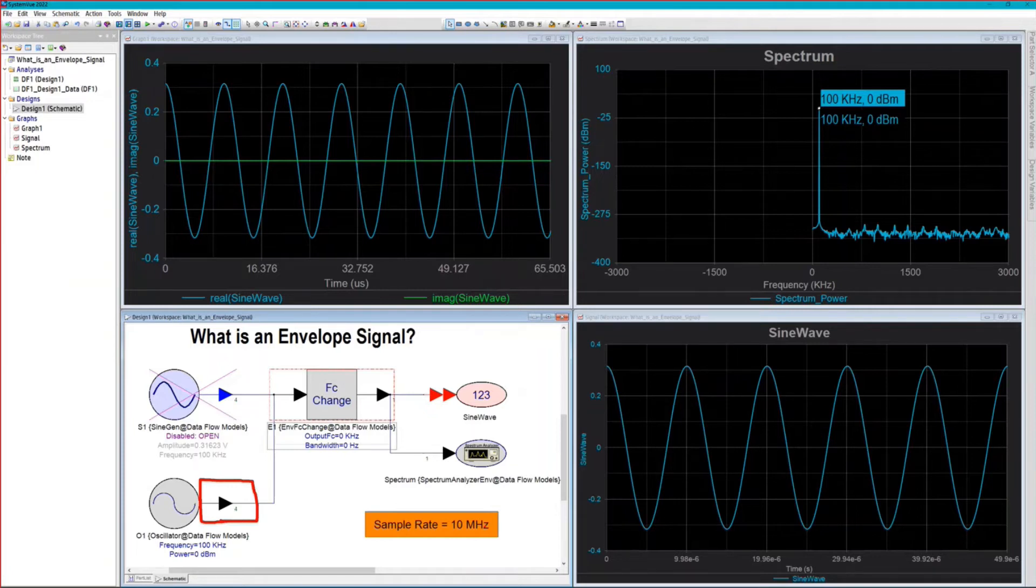SystemVue is sampling at the bandwidth of the signal. You might say the modulation rate of the signal. And when you change the characterization frequency to zero hertz, the documentation for this part says that the frequency will be the frequency at port two minus the frequency at port one. Well, if this is zero and this is 100 here at the input, the difference is 100, and that's why we get the sine wave you see here.